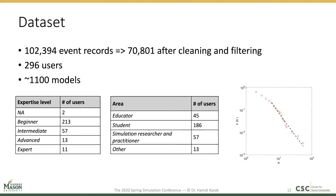After cleaning and filtering the data, we had approximately 70,000 user actions from 296 users, and in total approximately 1,100 models developed. You see the user breakdown based on expertise level and area on the left and middle. The simulation-per-user distribution is on the right. We fit this data to the power law distribution, gathering a dashed line fit with exponent 2.94 and lower cutoff value of six. This distribution resembles user behavior seen in other technological platforms — many users develop very few models, but some develop a lot.